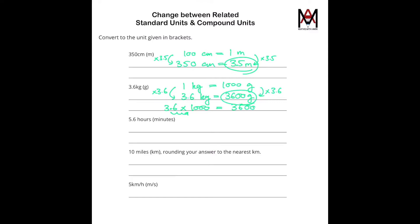5.6 hours into minutes. So we know that 1 hour equals 60 minutes. And this is multiplied by 5.6. So we need to multiply 60 by 5.6.